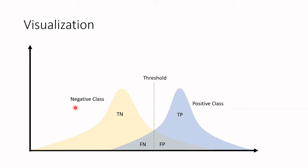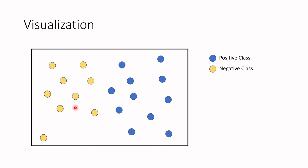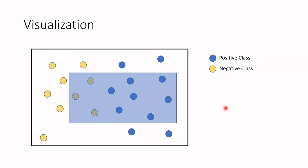Let's move forward to the next visualization. Over here we have the two different classes, and our model prediction is represented by this blue rectangle. Anything inside this blue rectangle our model predicts as positive. Looking only at the positive class, we can divide it into two groups: the truly predicted positive and the falsely predicted negative — whatever is outside. And looking only at the negative class, it's divided into the truly predicted negative and the falsely predicted positive.